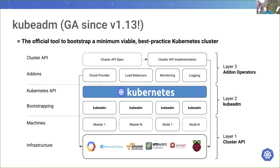Today we're going to talk about HA. For example, we'd create three masters or control plane nodes, and execute various kubeadm commands on these. Then later we can join more nodes. kubeadm is solely responsible for this middle layer — once cluster creation or bootstrapping is done and the cluster is conformant, other tools will take over.